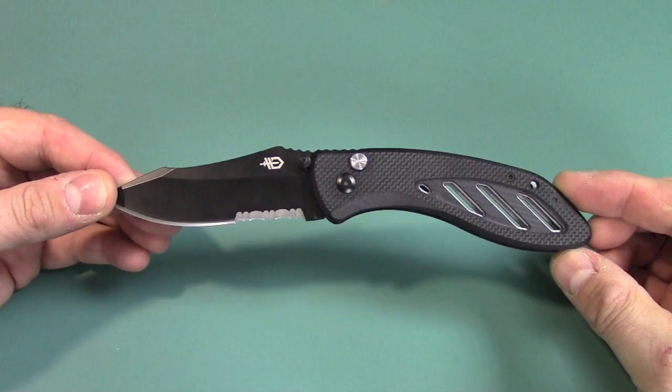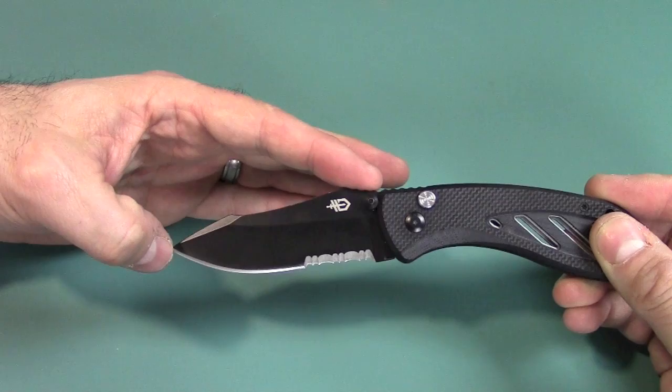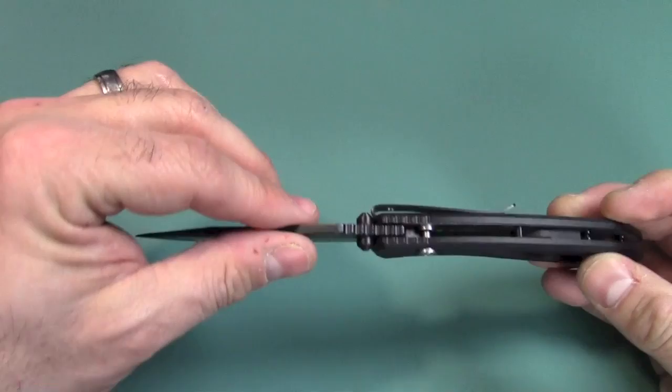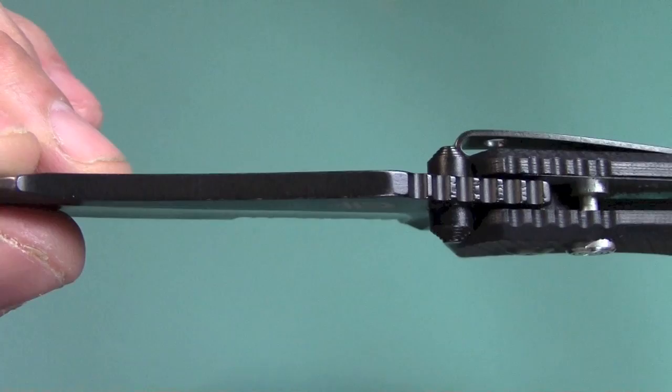It's overall length is seven and three quarter inches long. Blade length, the documentation says it's 3.18 inches, but when I measure it, it's three and a quarter inches. Blade thickness is 0.12 inches thick. So it's not too thin, not too thick.